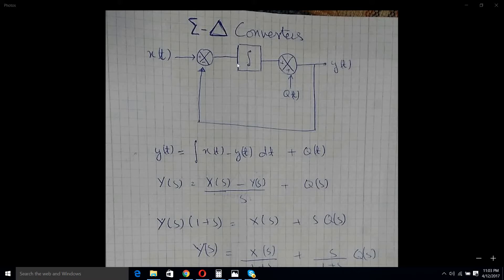You integrate it, it goes to an ADC, there comes the quantization noise in it, and then you have the output. So writing this block diagram in an equation, you get y of t is equal to the integral of x of t minus y of t dt plus q of t.